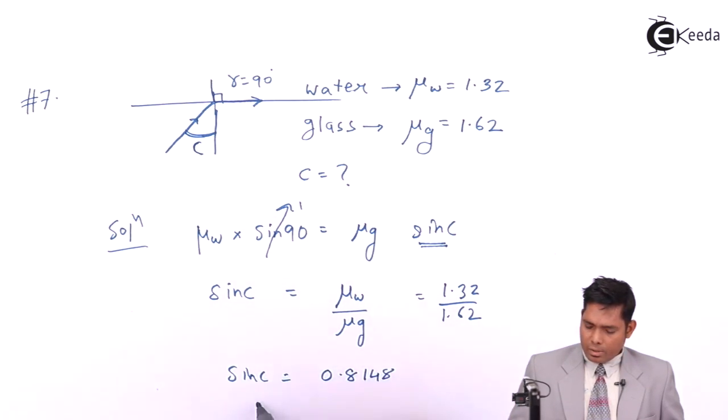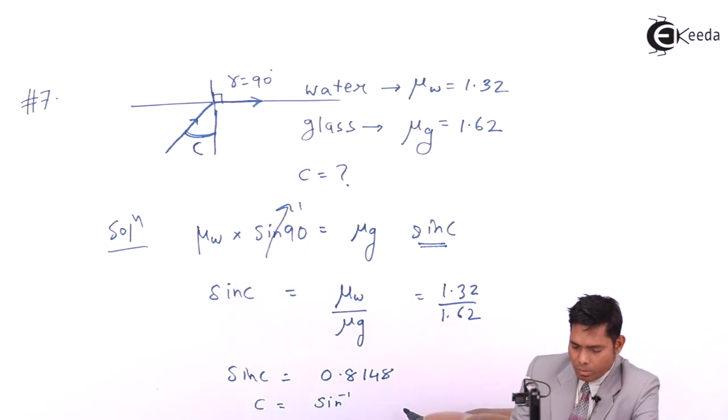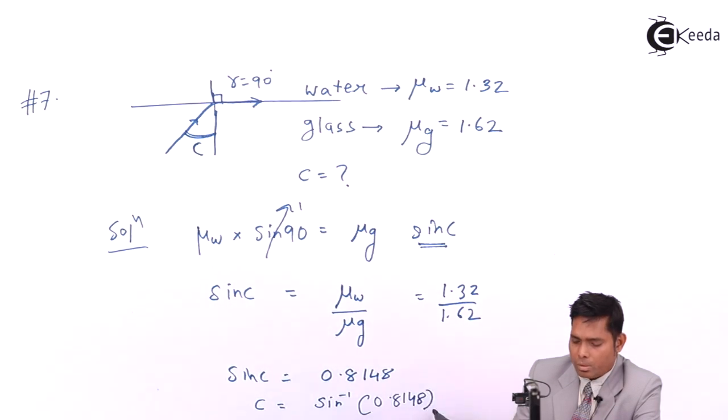So if it is the case, then C, the critical angle, is the sin inverse of this, which I will just write out directly - 54 degrees and 35 minutes. Sin inverse of, from log table, you will find.